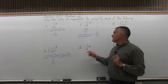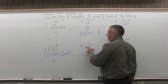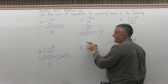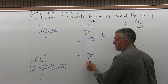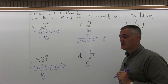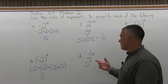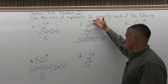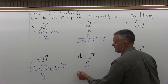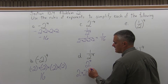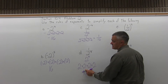Part D is 1 over 2 to the negative fourth. When a negative exponent occurs in the denominator, it tells you to move it to the numerator. Some math teachers call this the elevator rule — you get to ride the elevator but you pay the toll: the sign of your exponent changes to the opposite. So it becomes 2 to the positive fourth. 2 times 2 times 2 times 2 is 16. The answer for 1 over 2 to the negative fourth is just 16.